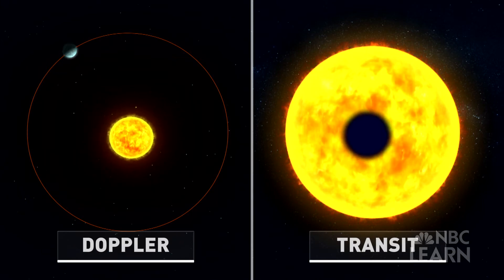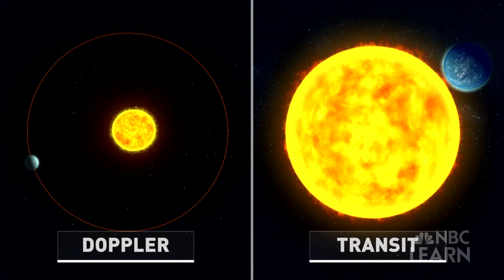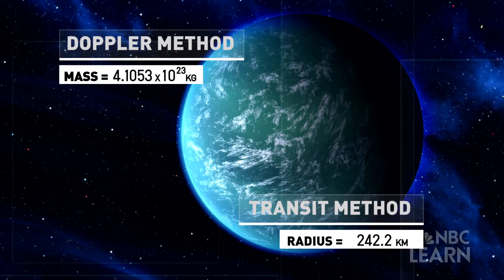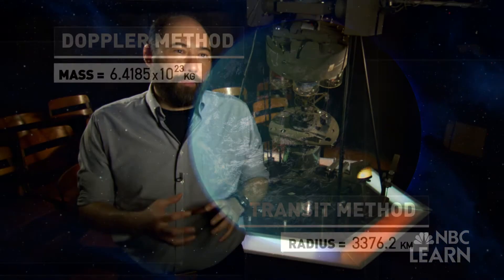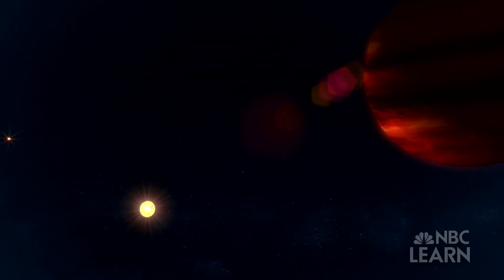Using Doppler and transit methods, astronomers are able to determine other characteristics of an exoplanet. The Doppler technique gives us the mass. The transit technique gives us the radius, or the actual physical size of the planet. By combining those two different measurements, we can get the density of the planet and find out, is it a rocky planet like Earth, or is it a gaseous giant planet like Jupiter?